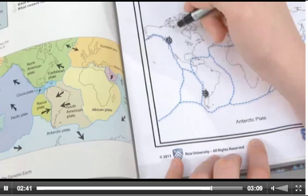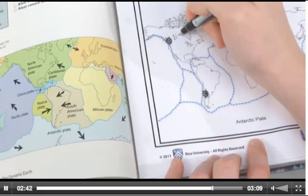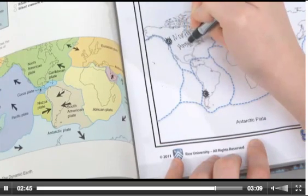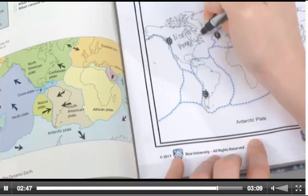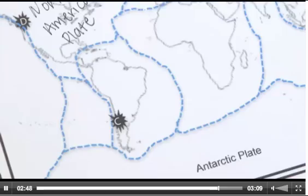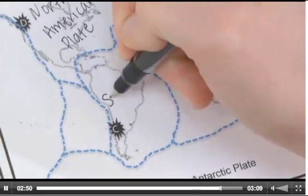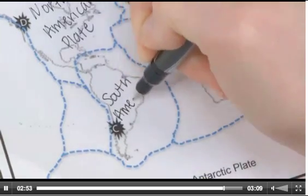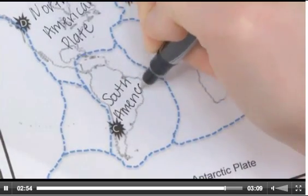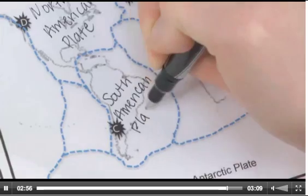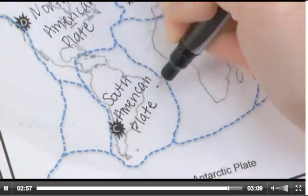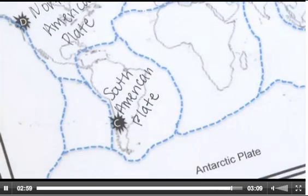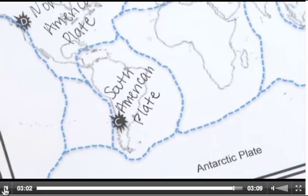Label each plate on the map, then shade the plates with map pencils using a different color for each plate. Point out that plate boundaries do not follow continental boundaries. Ask students: What happens at the boundaries of tectonic plates? What events may occur? What determines the types of landforms created?